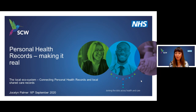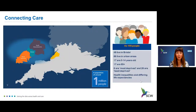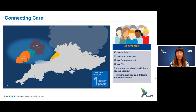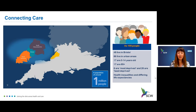The example I'm going to use is the Connecting Care programme, which I lead. Connecting Care is based in Bristol, North Somerset and South Gloucestershire, and is a programme dedicated to information sharing — how can we collectively make care better joined up for everybody. The region has around a million people, and while some areas are healthy and wealthy there are also significant inequalities, with life expectancy varying by up to 15 years.